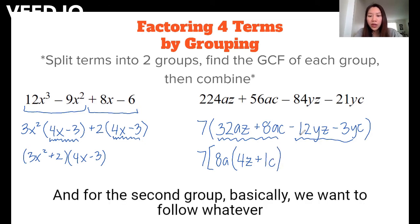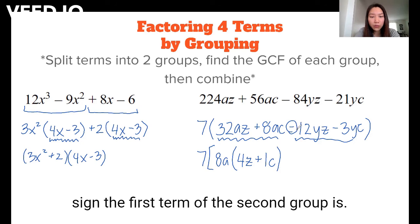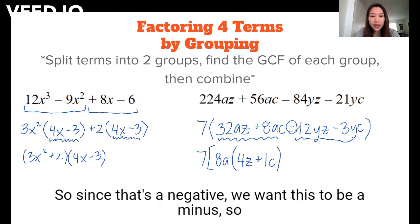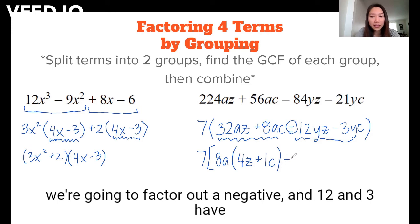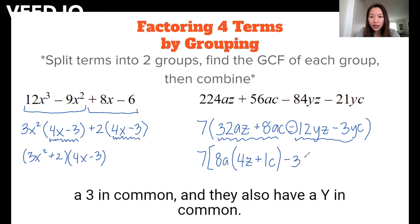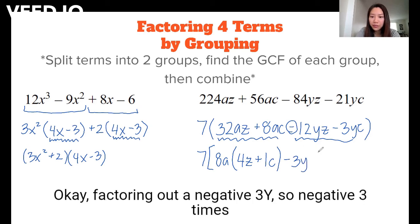And for the second group, basically, we want to follow whatever sign the first term of the second group is. So since that's a negative, we want this to be a minus. So we're going to factor out a negative, and 12 and 3 have a 3 in common, and they also have a Y in common. Okay, so we're factoring out a negative 3Y.